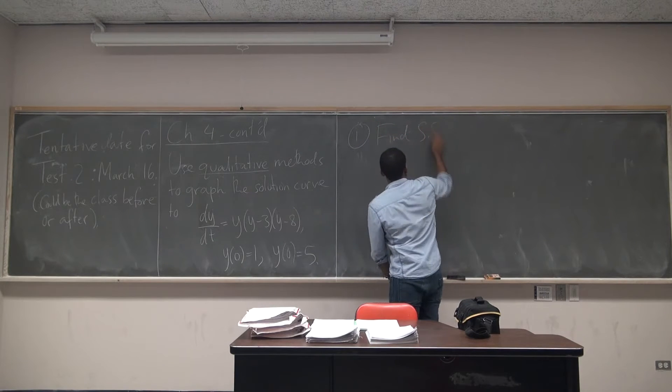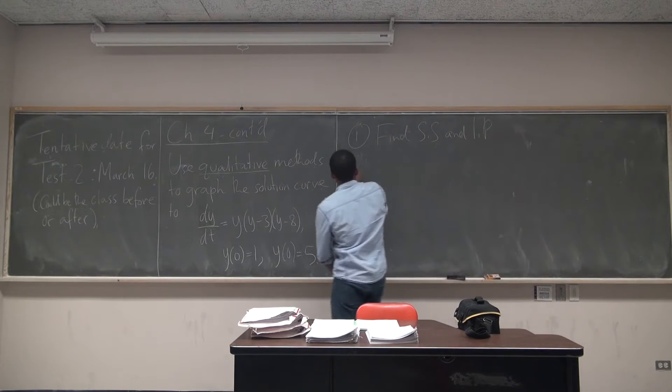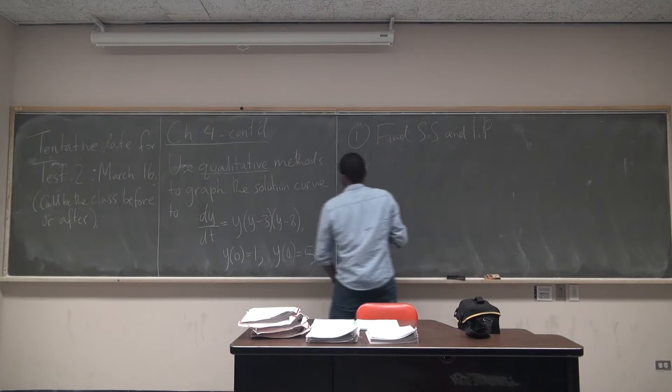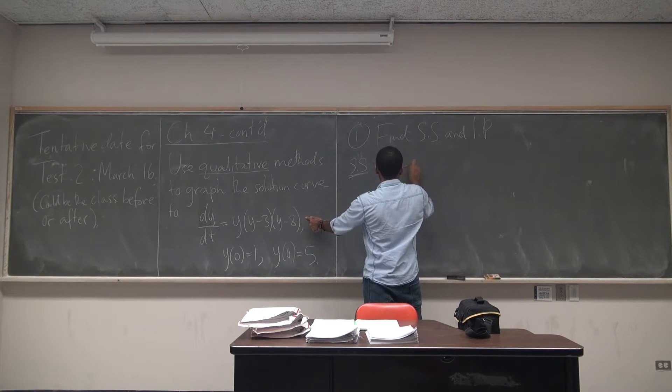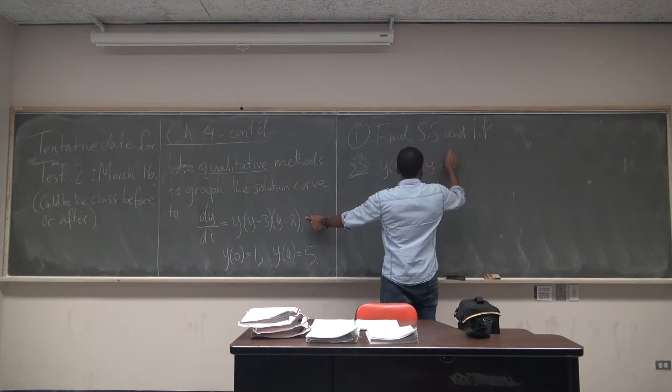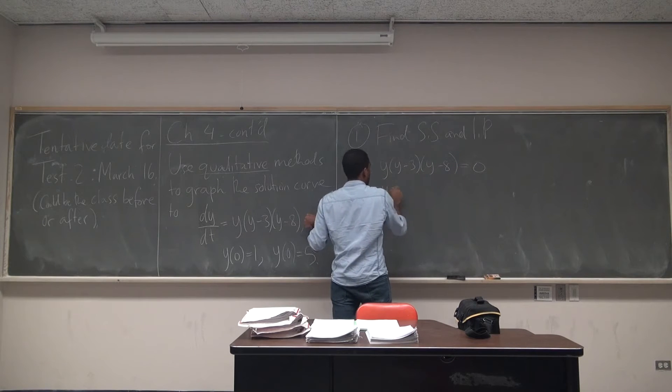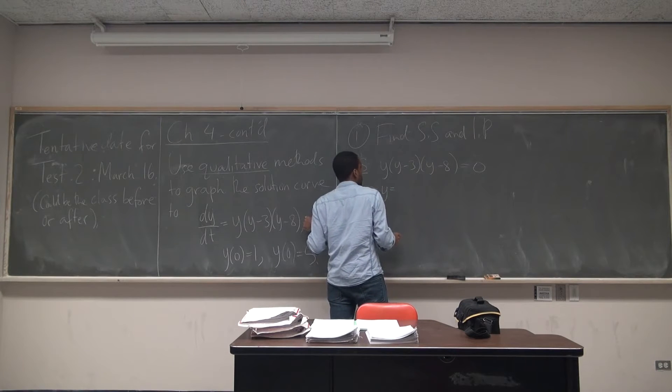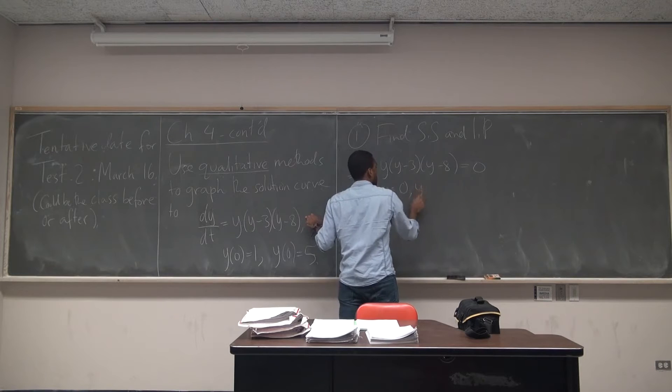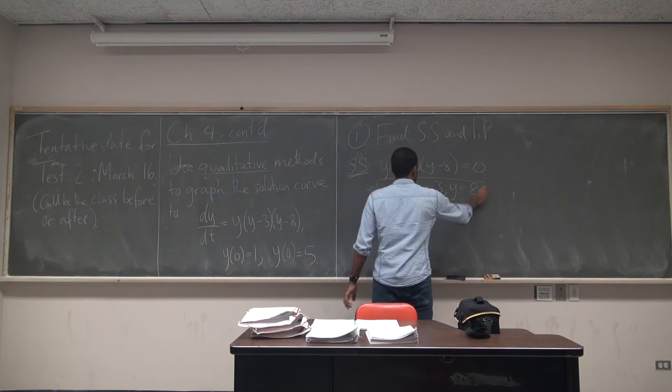Find the steady states and the inflection points. How do I find the steady states? Set what equal to zero? The derivative. So this guy, we're just going to set him equal to zero. So this means that Y is equal to, what are the solutions? One, zero, three, and eight. So these guys here are your steady states.